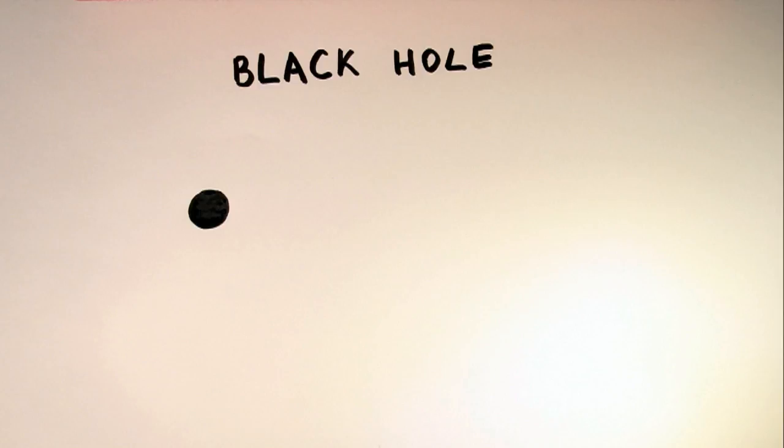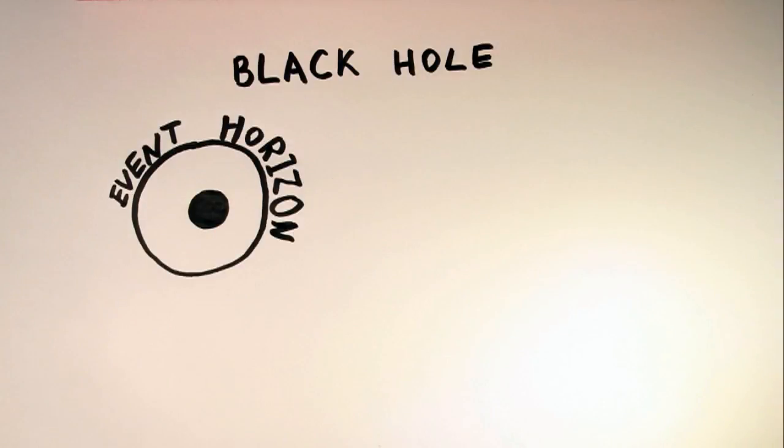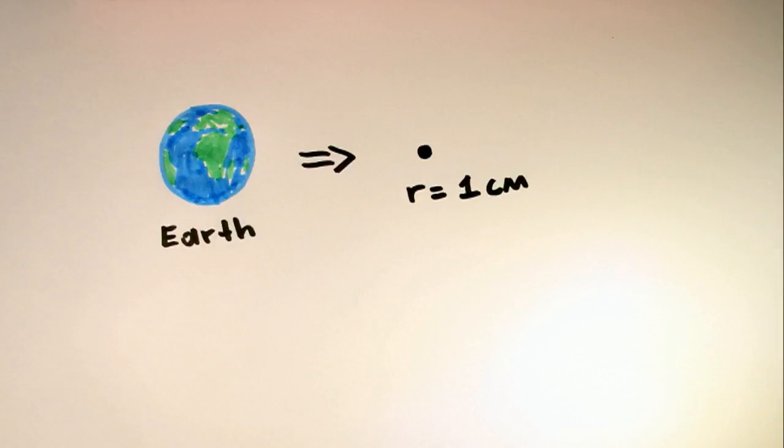Black hole is a region of space that nothing, even light, can escape from. The boundary of this region is called event horizon. For a non-rotating spherical black hole, this is defined by Schwarzschild radius. As you can see, it is proportional to the mass of the object, so for the Earth to be a black hole, it has to be shrinked down to one centimeter.